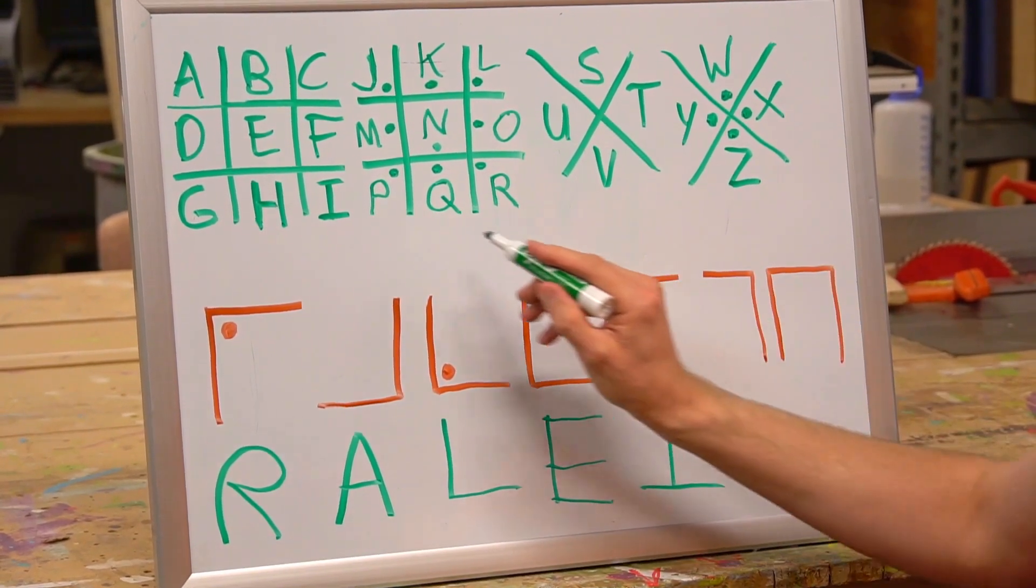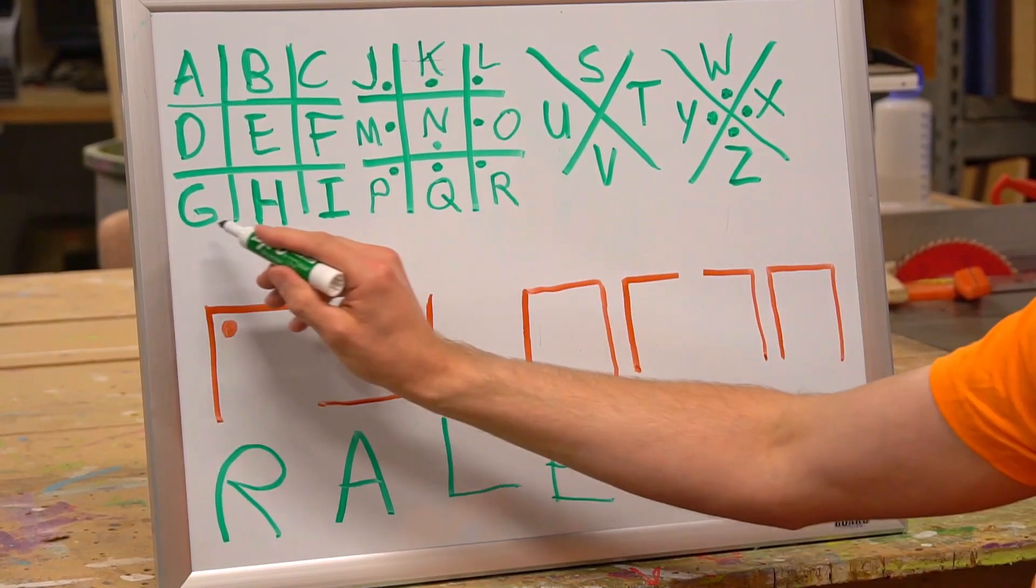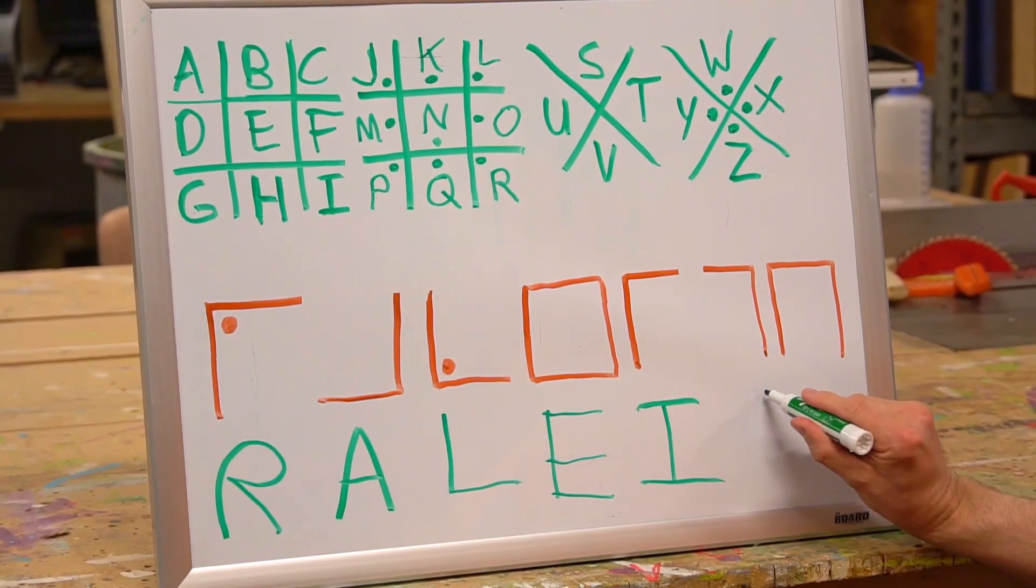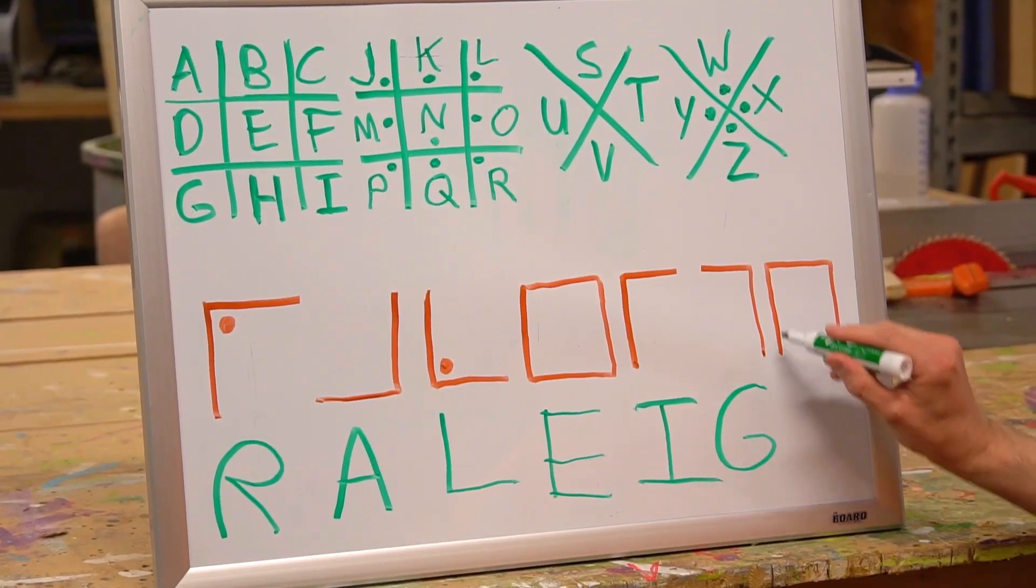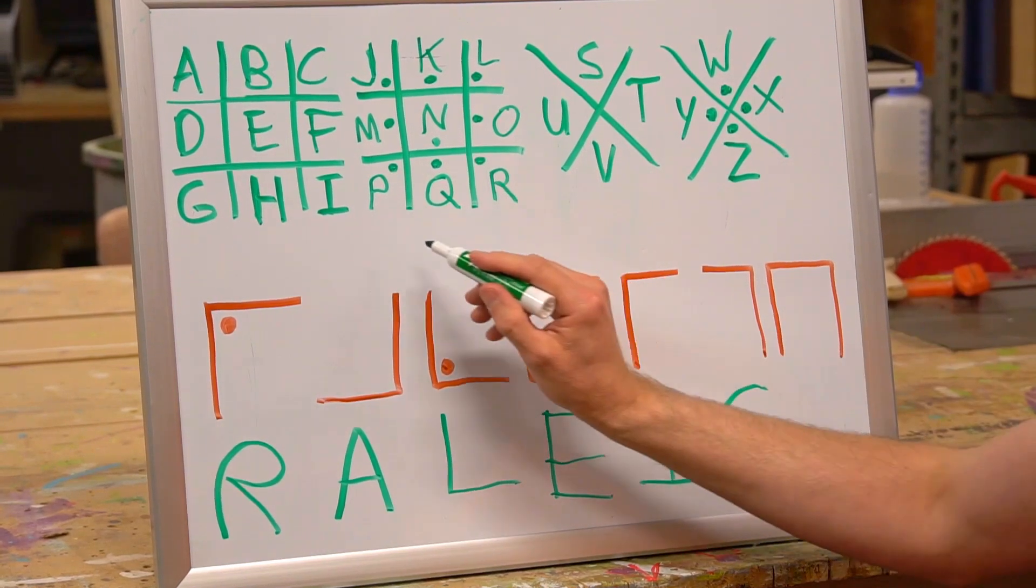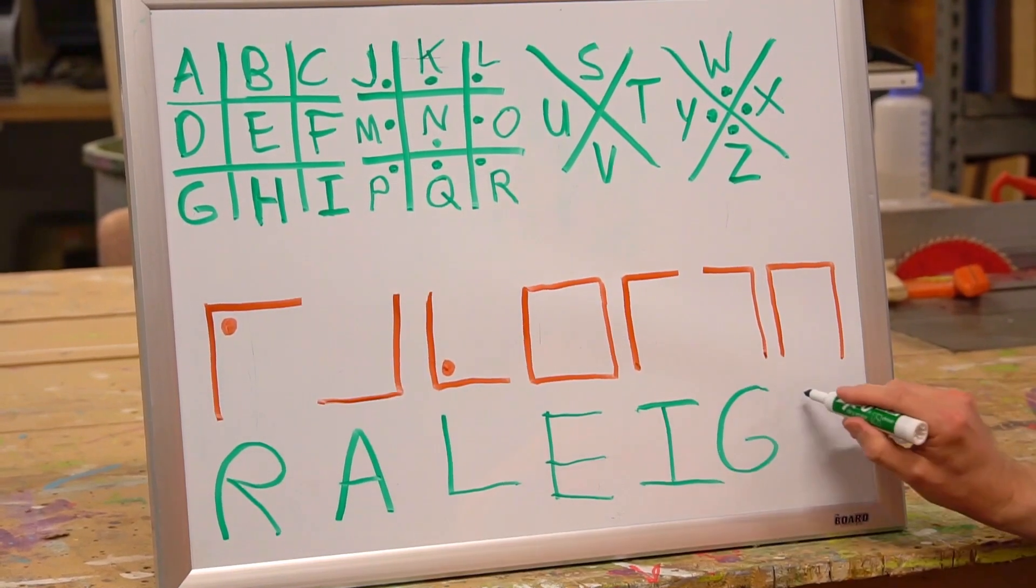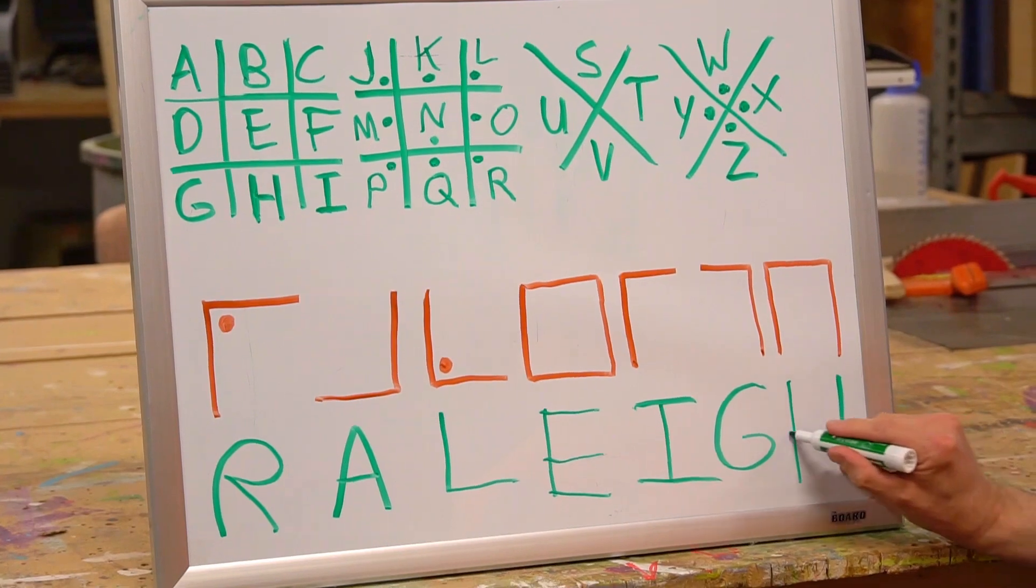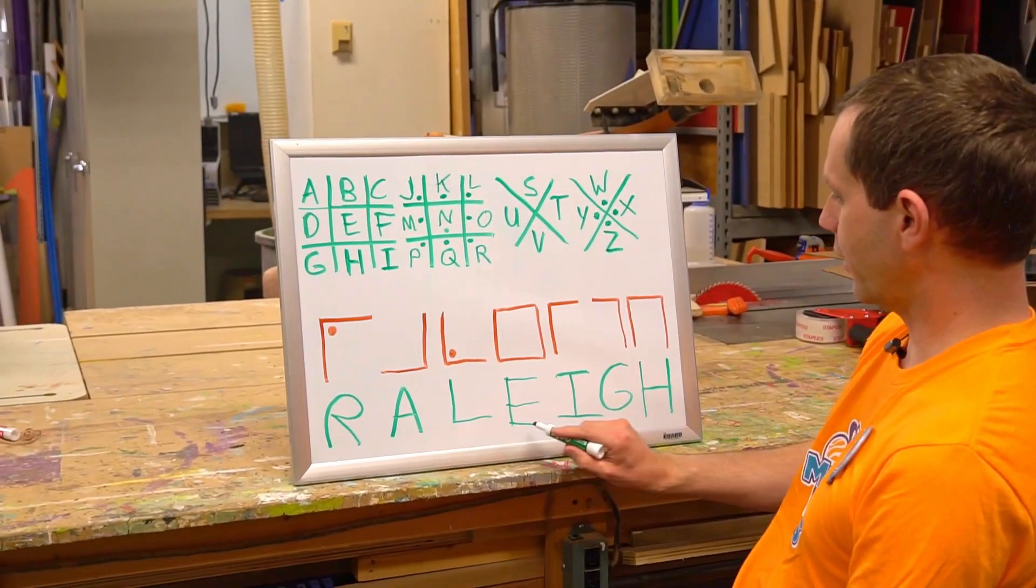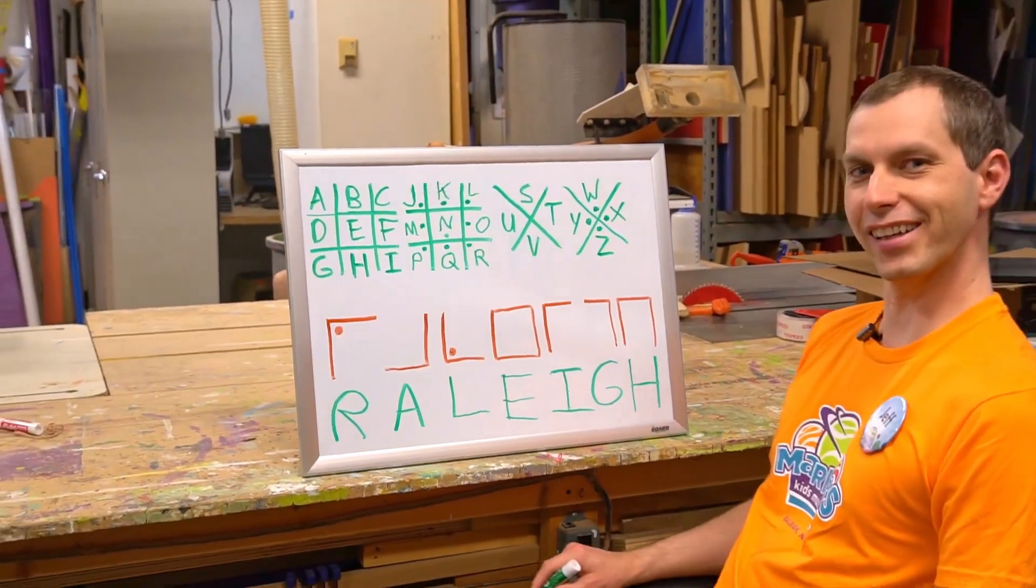And this one here looks like a G. And then this one would be the H. R-A-L-E-I-G-H. Raleigh.